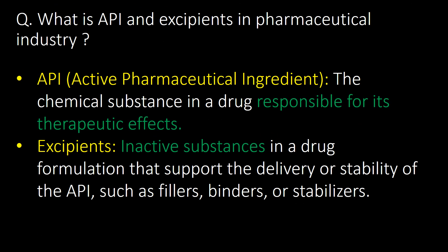What is API and Excipients in the pharmaceutical industry? API, that is Active Pharmaceutical Ingredient, is the chemical substance in a drug responsible for its therapeutic effect. Whereas excipients are inactive substances in a drug formulation that support the delivery or stability of the API, such as fillers, binders or stabilizers.